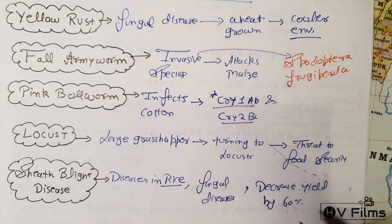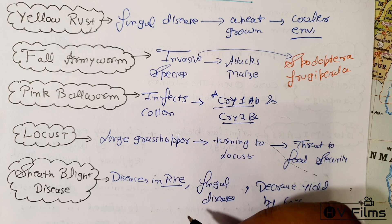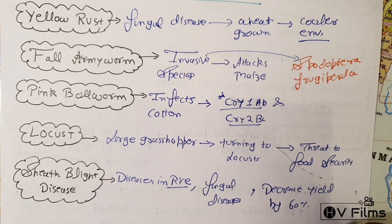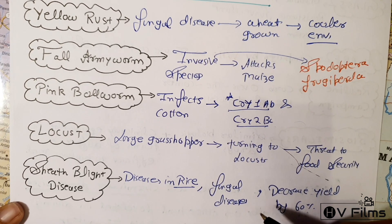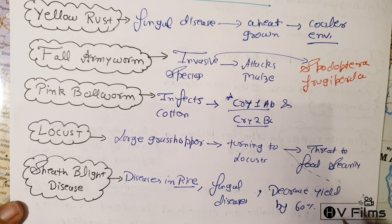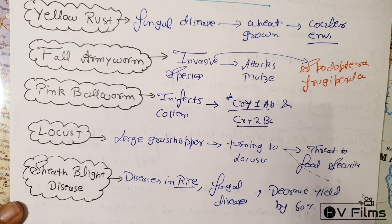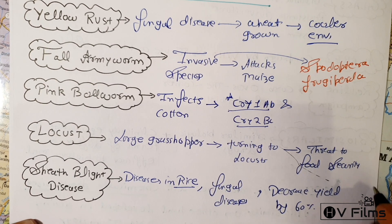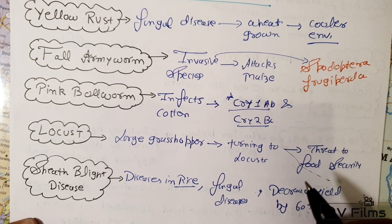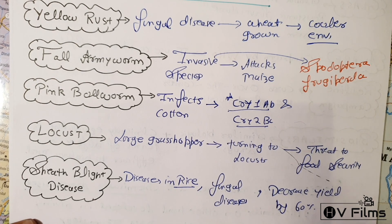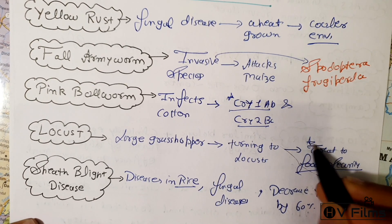Locusts are large, mainly tropical grasshoppers with a strong power of flight. Under dry and stressful conditions, grasshoppers transform into locusts. Only four species are found in India: the desert locust, migratory locust, Bombay locust, and tree locust. Locust adults can eat their own weight every day, posing a huge threat to food security.